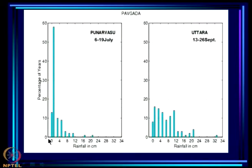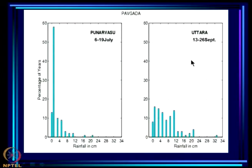For Paugada, during Poonarvasu (6th–19th July), the probability of absolutely no rain is very small but the probability of very little rain is very high, with a long tail of diminishing chances of 3, 5, or 6 centimeters. By contrast, for Uttara — where rainfall is assured — the probability of zero rain is less than 10 percent, and it tends to rain quite a bit, up to about 10 centimeters, during this nakshatra. Information like this has been generated for every nakshatra at every station.